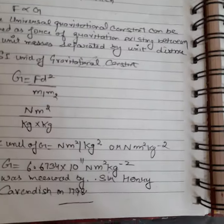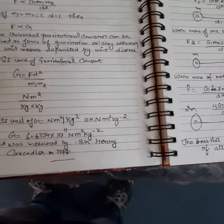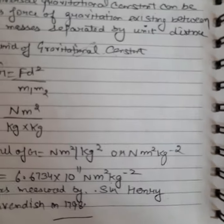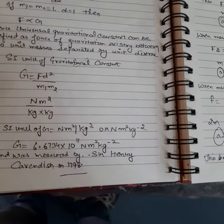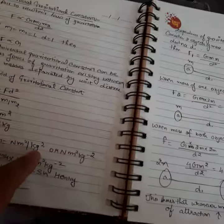The universal gravitational constant capital G is 6.673 times 10 to the power minus 11 newton meter square per kilogram square, and it was established in 1978.